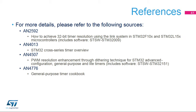Three application notes complement the timer sections in the reference manual. AN-2592 gives a practical implementation of a 32-bit timer made of two synchronized 16-bit timers and comes with a software example. AN-4013 provides a more detailed overview of all timer features and available firmware examples. AN-4507 presents an implementation of PWM resolution enhancement by means of dithering techniques and comes with a software example. AN-4776 starts with few reminders on timer operating principles and contains a collection of examples for standard timer use cases, also coming with a software example.